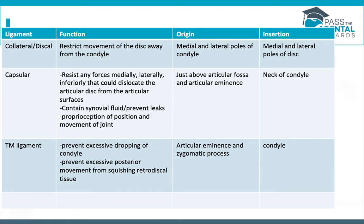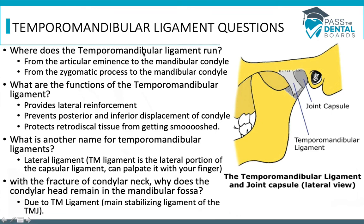Review questions for the TM ligament: Where does it run? From the articular eminence to the mandibular condyle, or from the zygomatic process to the mandibular condyle. Its functions include providing lateral reinforcement, preventing posterior and inferior displacement of the condyle, and protecting the retrodiscal tissue. Another name for the TM ligament is the lateral ligament. When there's a fracture of the neck of the condyle, the head of the condyle remains in the mandibular fossa because of how strong the TM ligament is.